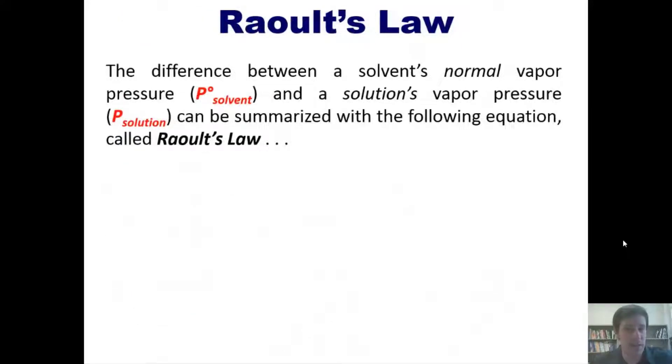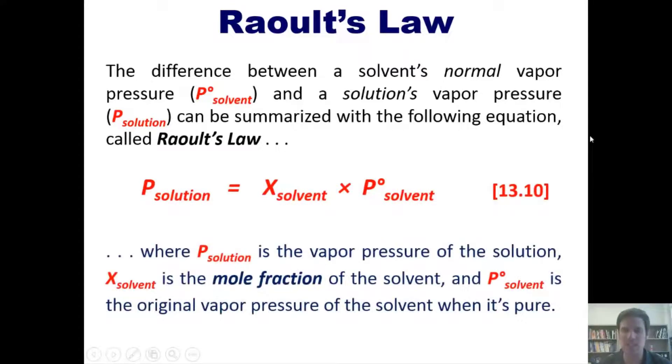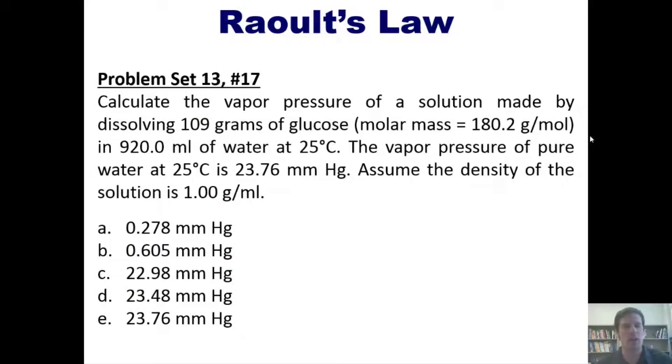That brings us to Raoult's law. The difference between a solvent's normal vapor pressure, P°(solvent), and the solution's vapor pressure, P(solution), can be summarized using Raoult's law: P(solution) equals X(solvent) times P°(solvent), where X(solvent) is the mole fraction of the solvent and P°(solvent) is the original vapor pressure the solvent would have if it were pure. Here's a problem: calculate the vapor pressure of a solution made by dissolving 109 grams of glucose in 920 mL of water at 25°C. The vapor pressure of pure water is given; assume the density is 1 g/mL. I'll post a link to a separate video where I answer this.